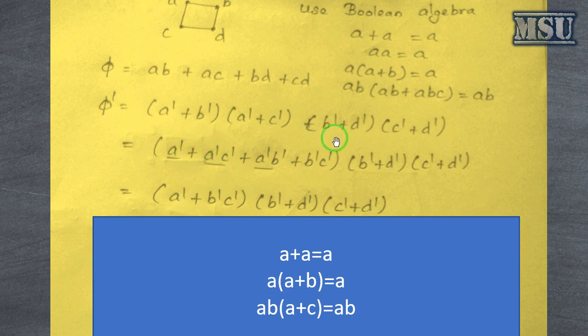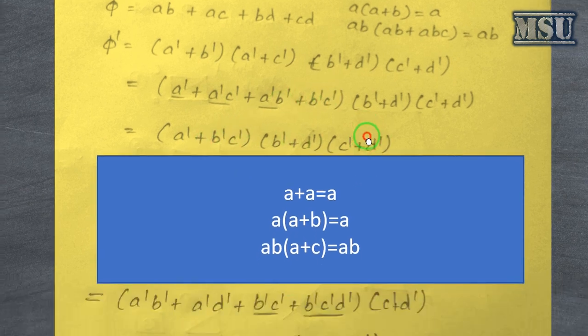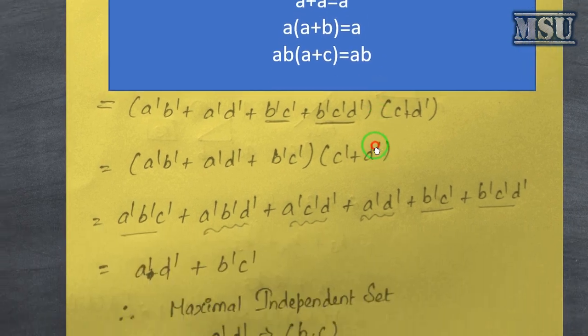So a' plus a'b', which is equivalent to a' and then here we are having b'c', you can't reduce that. So we can write it as that. And then you continuously multiply on that. So we can reduce this.